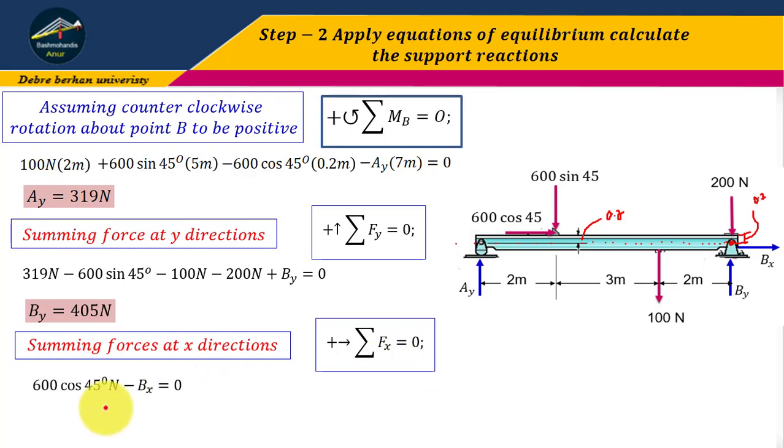Here, the positive direction is to the right. Therefore, 600 cos 45 Newtons plus Bx equals to zero. Therefore, Bx equals to negative 424 Newtons. This arrow must be to this direction.